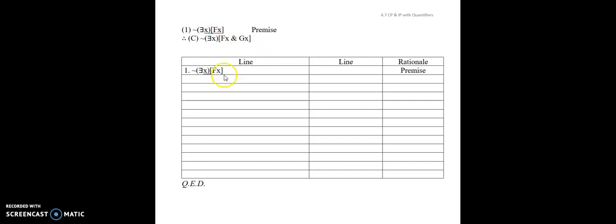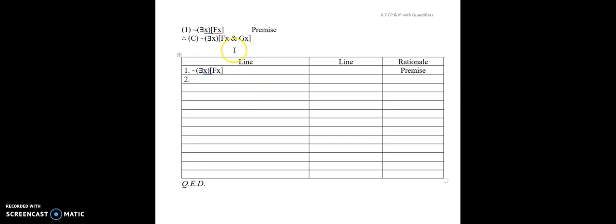The key feature of IP is that it's structurally the same as it was with CP. With IP, let's suppose you're trying this one and you're stuck and you just don't know where to go from here. One thing you can try is an indirect proof, which requires you to consider the negation of the conclusion. So as scratch work, pause and write down the negation of the conclusion.